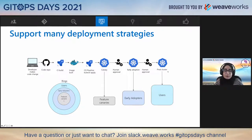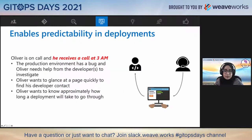This concept of deployment rings has been widely requested in our interactions with customers using GitOps with Azure. Fabricamp Trivia operator Oliver is on call and one night receives a call at 3am. There's a bug in production that needs to be addressed immediately, and he probably needs help from the responsible developer to fix this. He wants to glance at a page and find out the right contact whose feature recently made it into production, and also know approximately how long the deployment will take so he can update the customer on the line.